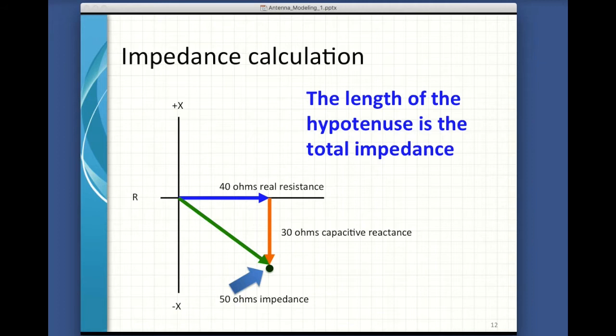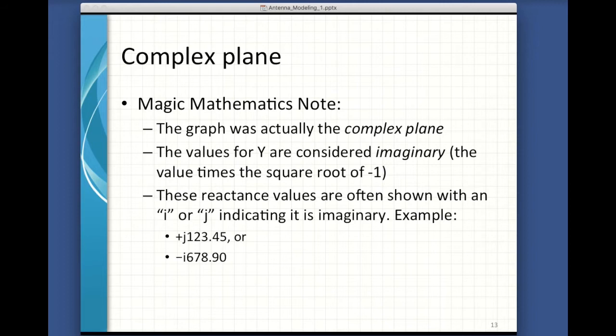Calculating impedance is a little more involved than just adding two numbers together. To compute the impedance, you put the resistance on the horizontal axis of the graph, then you put the reactance on the graph starting with the endpoint of the resistance, and then you determine the total impedance by measuring the hypotenuse of the resulting triangle. In this example, 40 ohms of resistance along with 30 ohms of capacitive reactance results in 50 ohms of total impedance. Note that the feed point impedance is sometimes referred to as Z0. The graph is actually called the complex plane, with real numbers along the x-axis and imaginary numbers along the vertical axis.